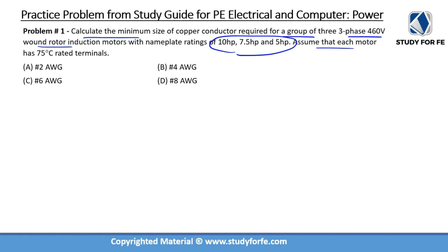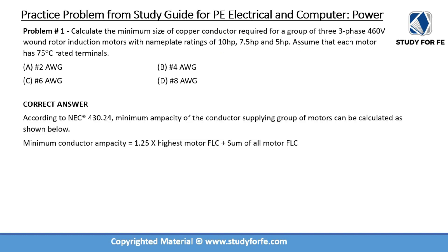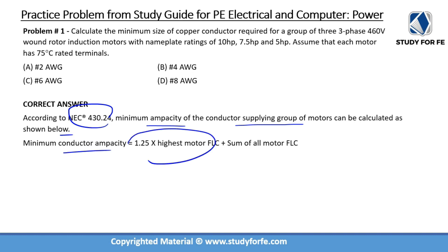We can assume that each motor has 75-degree rated terminals. According to NEC 430.24, the minimum ampacity of the conductor supplying a group of motors is equal to 125% of the highest motor FLC plus the sum of all remaining motor FLCs.